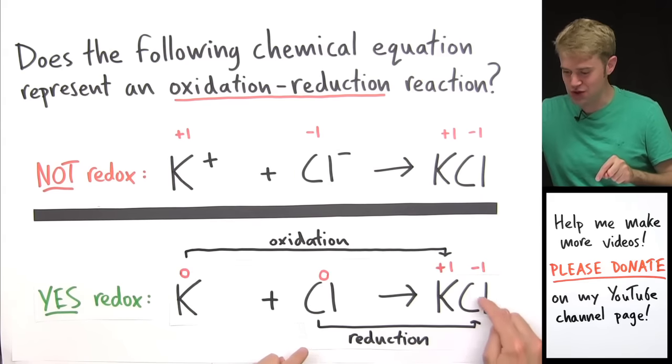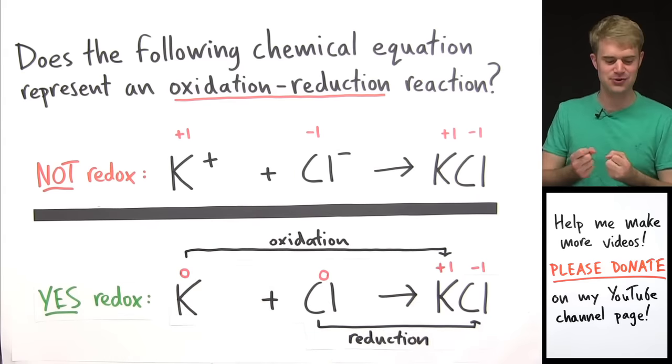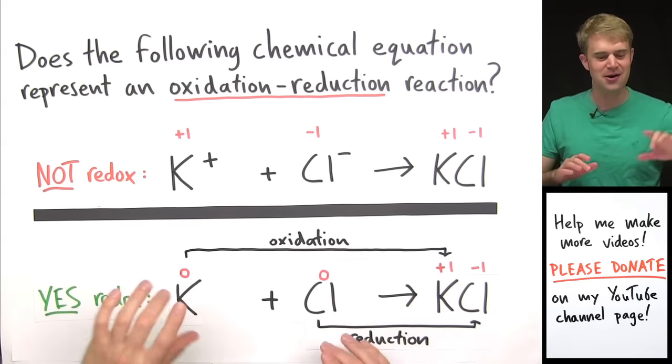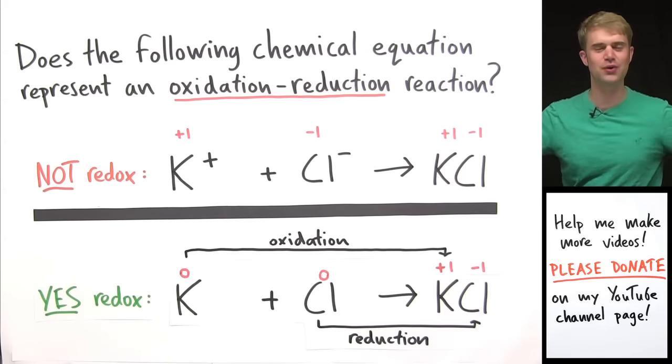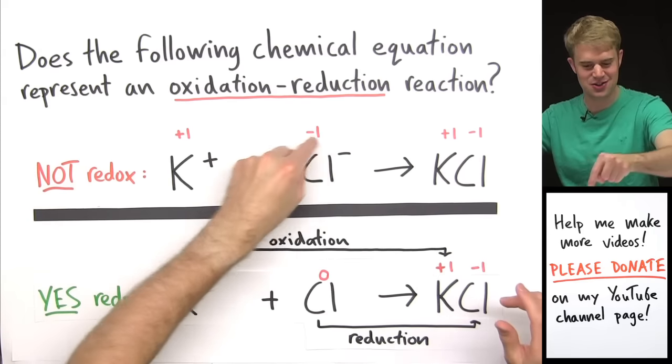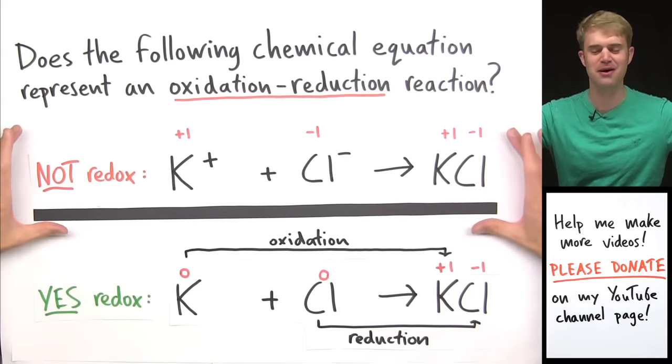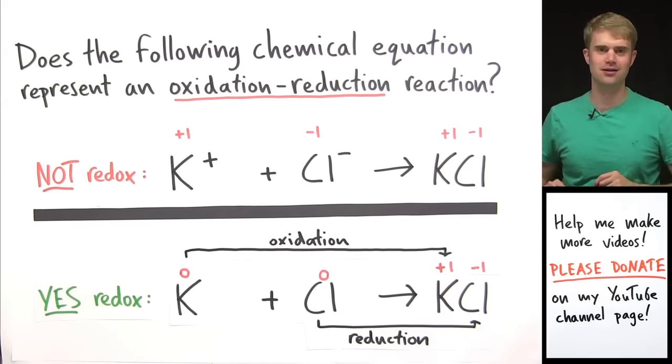And the K got oxidized to +1 by losing an electron. The Cl got reduced to -1 by gaining an electron. The charges changed because electrons were transferred and that's why this is a redox reaction and why this, because the charges are the same the whole time, that's why this is not.